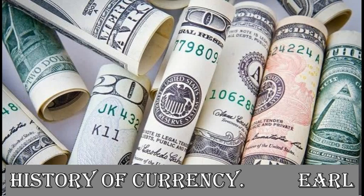Now let us know the beginnings of paper currency. Paper currency came about as a result of one of the four great inventions: papermaking, printing, gunpowder and the compass. Ancient China led the way, although it wasn't until the Tang Dynasty during the 7th century that merchants began using paper in the form of what would these days be called promissory notes.